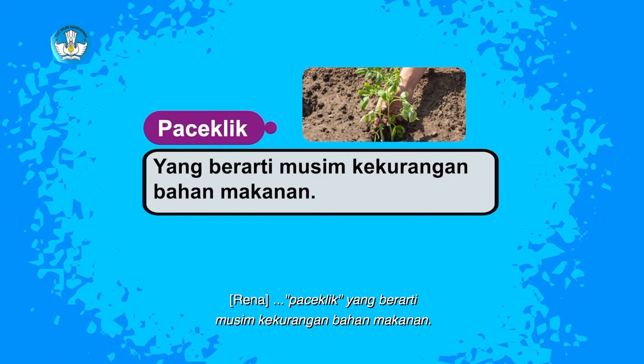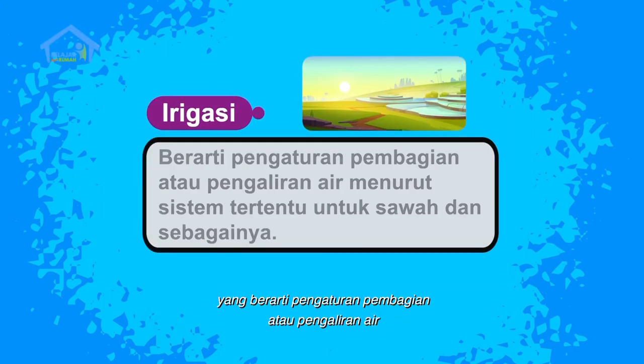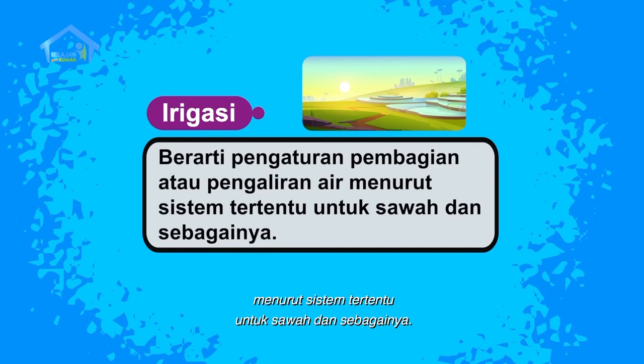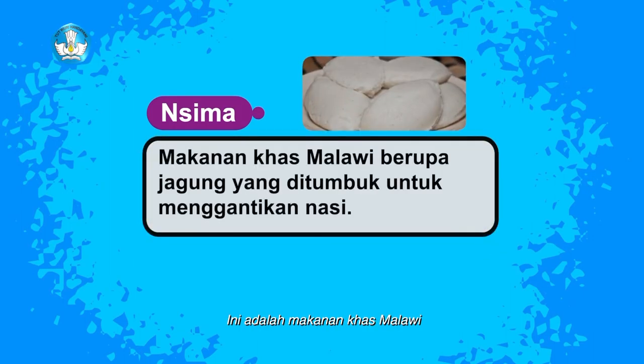Teman-teman, tadi kita sudah membaca artikel tentang William Kamkwamba dan sudah belajar kosa kata baru. Di antaranya, paceklik yang berarti musim kekurangan bahan makanan. Lalu kata irigasi yang berarti pengaturan pembagian atau pengaliran air menurut sistem tertentu untuk sawah dan sebagainya. Kita tadi juga mendengar kata sima, yaitu makanan khas Malawi berupa jagung yang ditumbuk untuk menggantikan nasi.